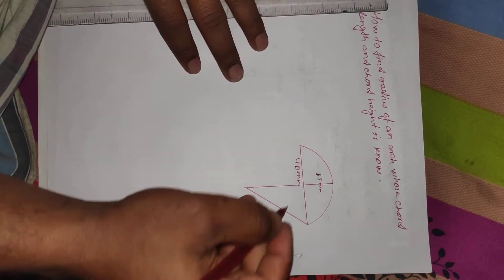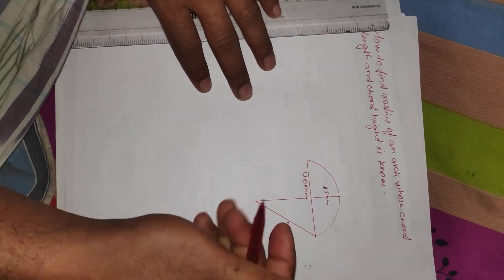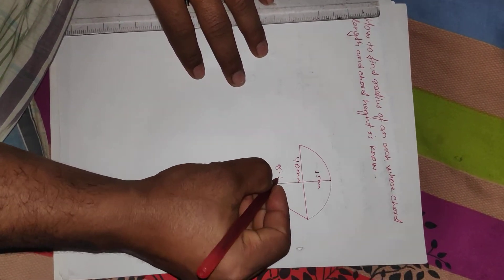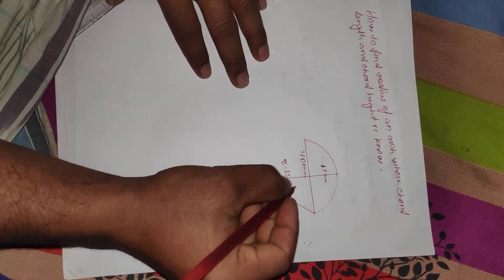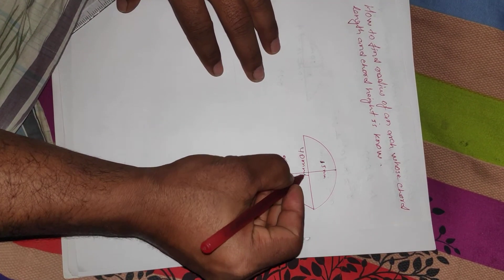This will be radius and this will be radius minus 15 mm. Suppose this angle is theta and here it will be 90.